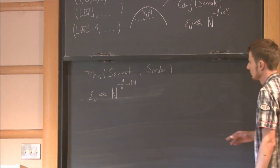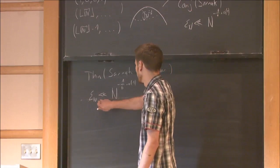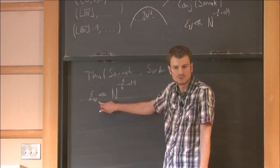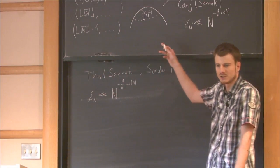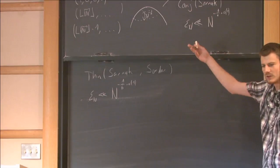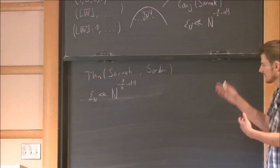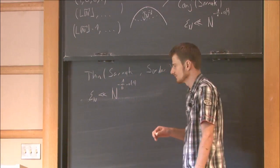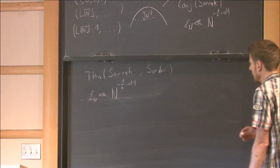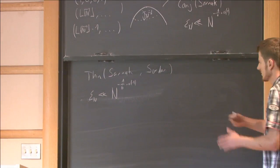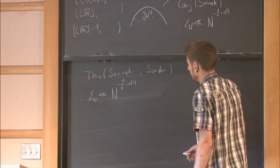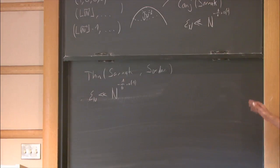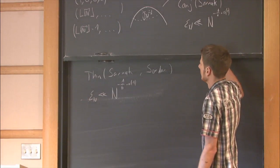Sodari's result is more general in the sense that it proves optimal results on epsilon_n for higher-dimensional spheres — for S4, S5, and so on, recovering the optimal exponents. Today I would like to sketch an older approach to these sorts of problems, which goes back to Kloosterman.